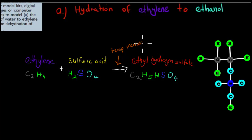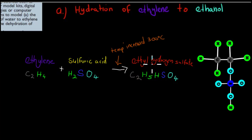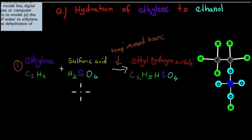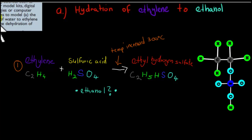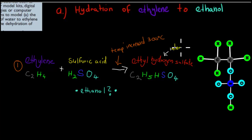When you increase the temperature, the molecules move faster, which means the two molecules can actually meet — and they have to meet before the reaction can happen. So before the temperature increase, nothing happened. This is step one, and it's important to note that we haven't produced ethanol yet — that was the whole reason why we did this. We produced the intermediate product, ethyl hydrogen sulfate, in this first step. Now we'll show you what happens when we add more water to produce ethanol.